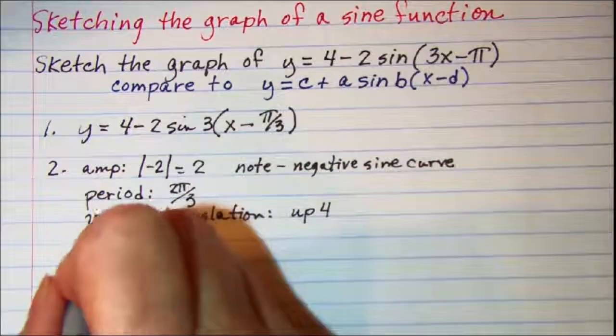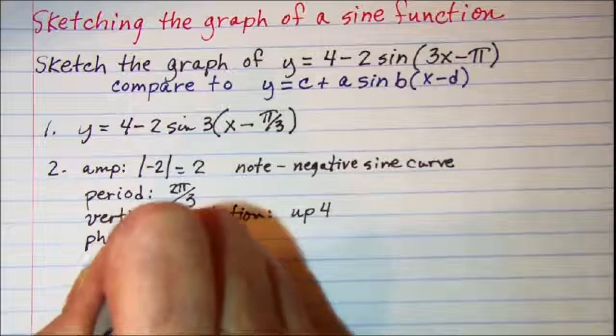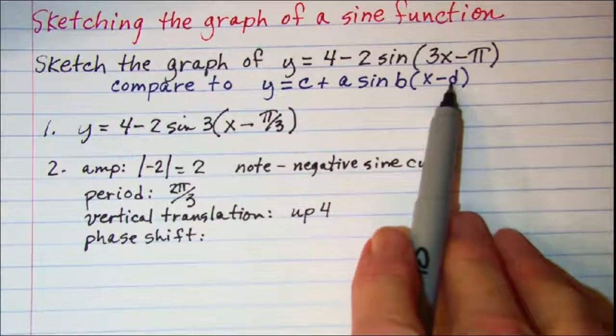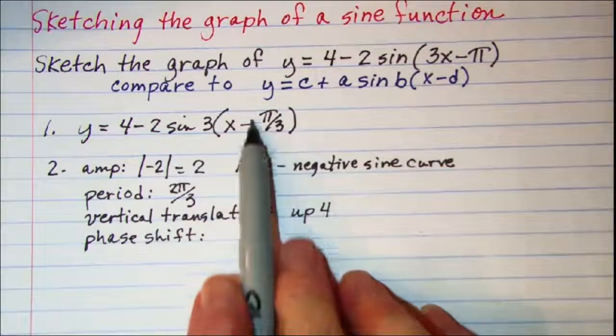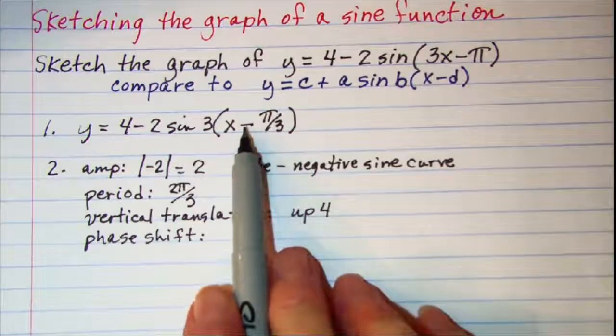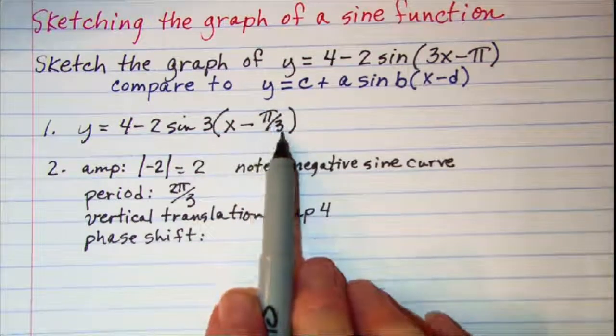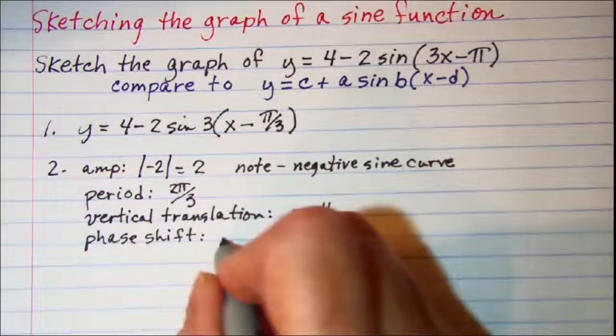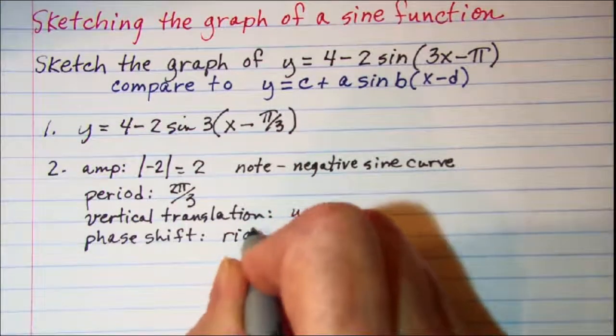And then finally our phase shift is the value of d. So our phase shift since this is a negative pi over 3, our phase shift is to the right pi over 3.